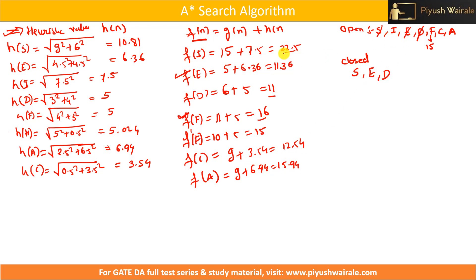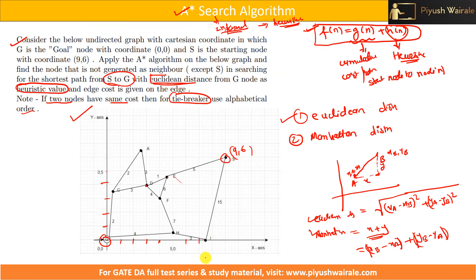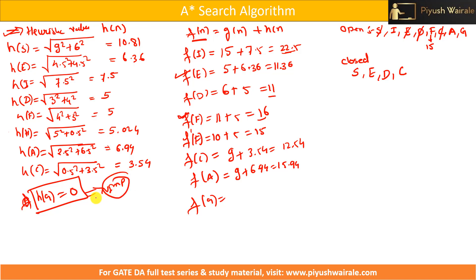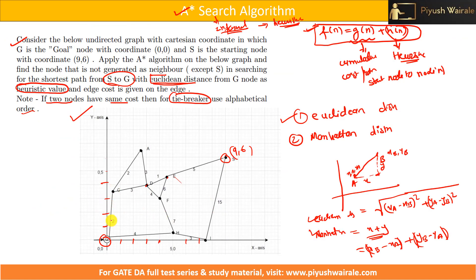Comparing all open list nodes — I at 22.5, f'(F) at 15, C at 12.54, A at 15.94 — the lowest is C at 12.54. So we explore C and add it to the closed list. From C, we can directly go to G. The heuristic value of the goal state h(G) is always 0 — this is a very important point.